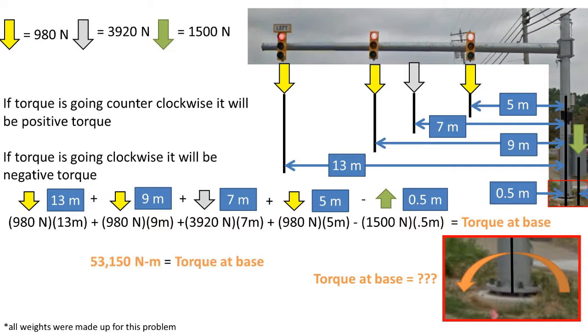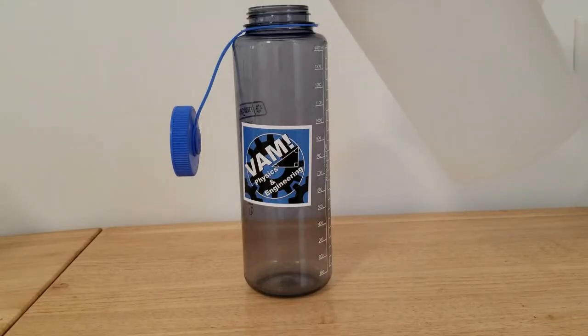After plugging in all of the torques in our calculator we get a torque at the base of 53,150 newton meters for our final answer. That concludes this video.